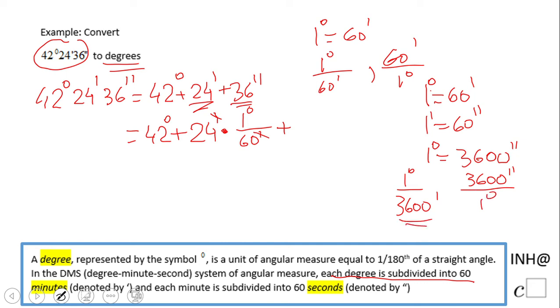one. So here we're going to have plus 36 seconds times the conversion: one degree over 3,600 seconds. And you notice the seconds cancel out. So what we